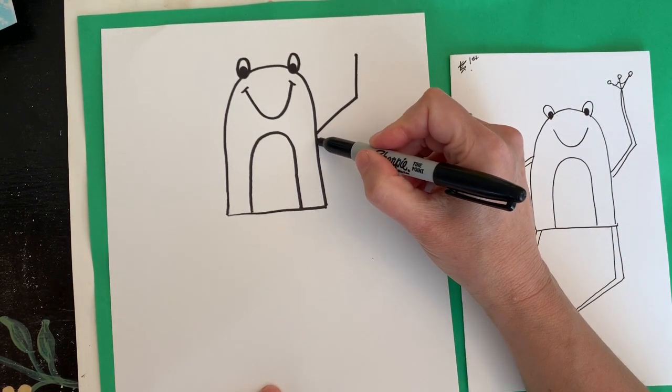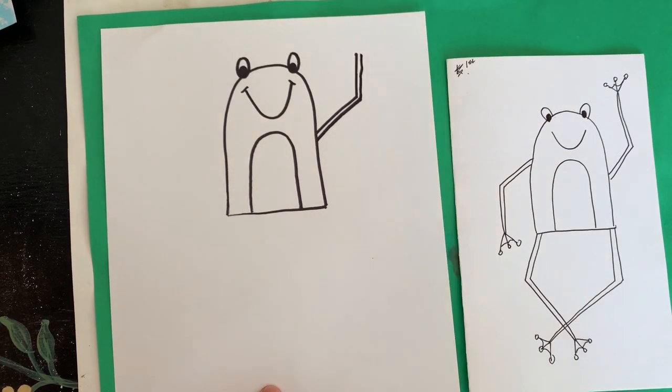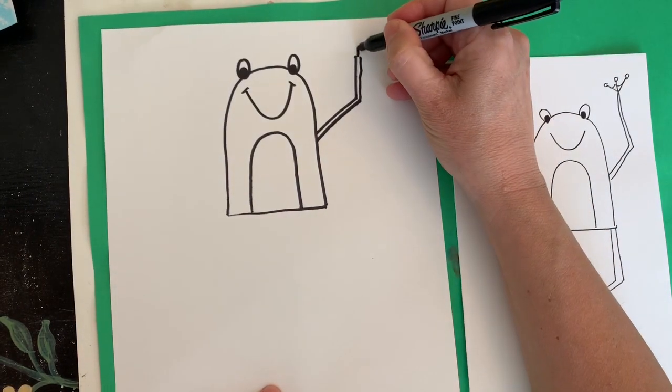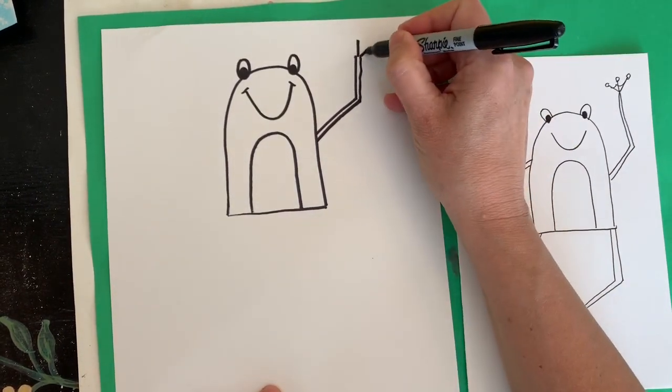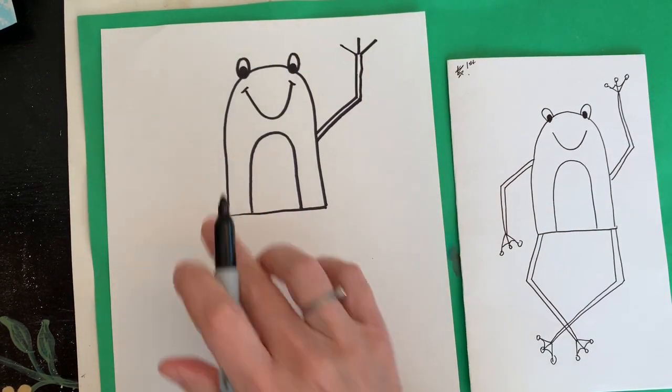I'm going to do another one right next to it. I'm keeping mine pretty skinny because frogs have pretty skinny legs. Then I'm going to make one toe in the middle and then two more sticking out like that. We'll come and finish that foot later.